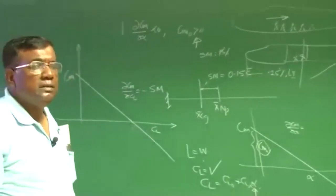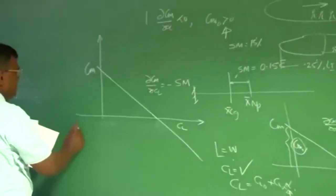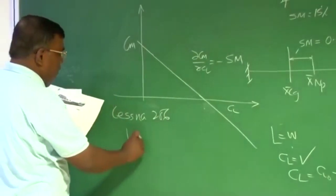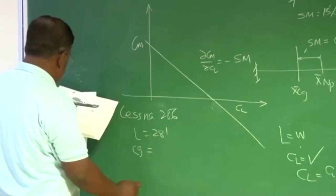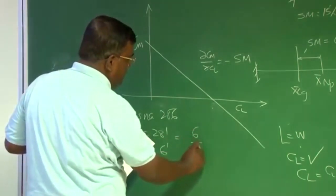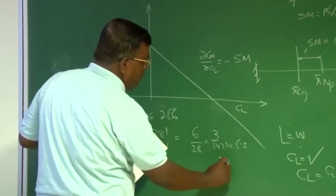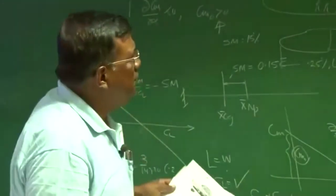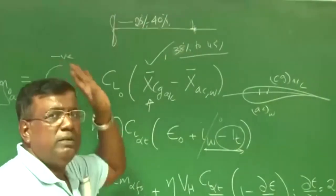Let us check for Cessna 206. Total length is around 28 feet and CG is roughly 6 feet from the nose. So 6 divided by 28 is 3 by 14, which is around 22 percent. This is the most forward CG; the most aft CG is slightly further back. So when I write 25 to 40 percent, do not hold me to it — for Cessna 206 it is around 22 percent.